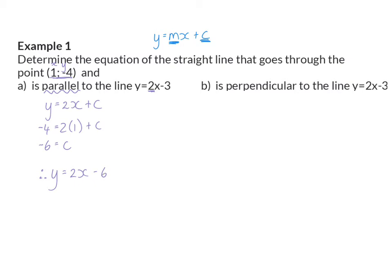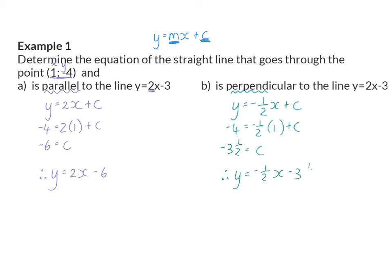In question B, they are saying that the line we need to calculate is perpendicular to the line y is equal to 2x minus 3, and for perpendicular lines, we know the product of the two gradients has to be equal to minus 1. So we know that this gradient of ours is the reciprocal and the opposite sign of the given gradient. To solve c, we are going to substitute in the extra coordinate. So we will have minus 4 is equal to minus 1.5 times 1 plus c, and that will give c equals minus 3.5. So my second equation is y is equal to minus 1.5x minus 3.5.